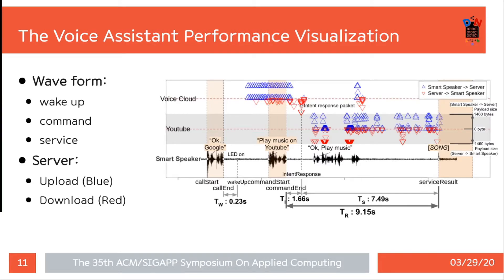This is a waterfall chart for indicating the performance metrics of the voice assistant. We can see the waveform recorded in the performance measurement system at the bottom. Above the waveform, there are the servers connected to the smart speaker according to IP address and port number. The blue and red triangles represent outbound and inbound packets to/from the cloud respectively. The farther from the center, the bigger the payload size.